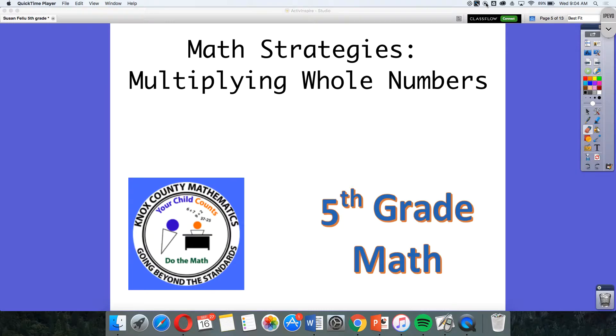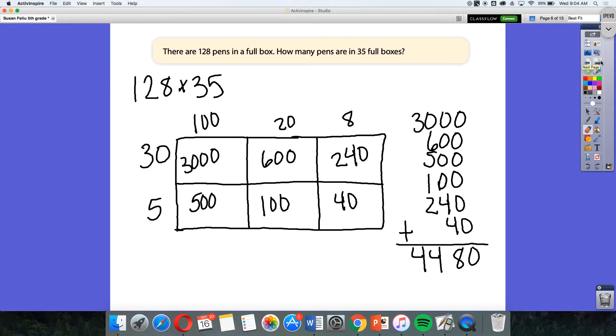So, let's go ahead and get started by looking at some of the previous methods we used to multiply whole numbers. Before we begin, let's look at our problem that we're going to be focusing on today. There are 128 pens in a full box. How many pens are in 35 full boxes? So, in order to get this answer, we have to multiply.